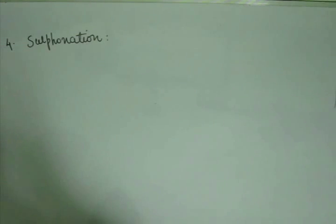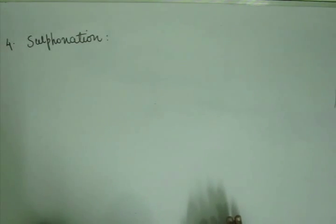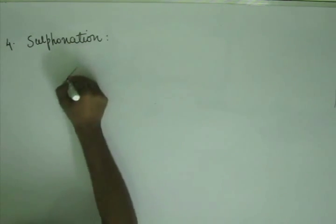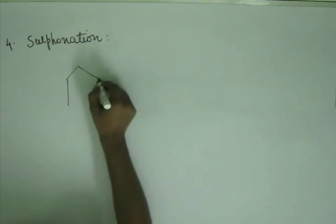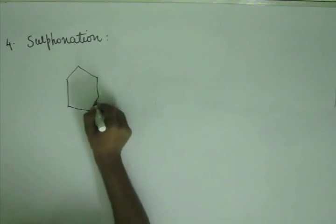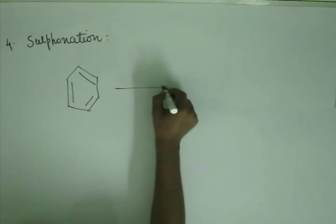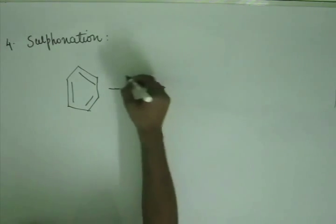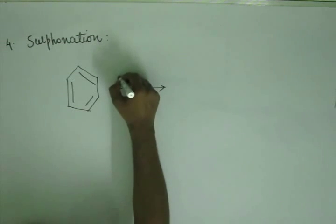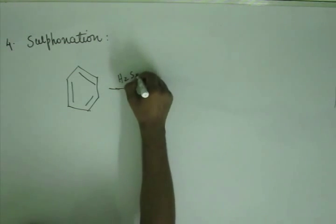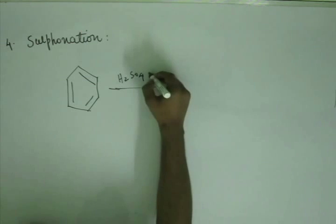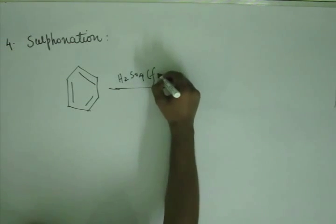Now we move on to sulfonation. Sulfonation will be carried out on exactly the same line as alkylation, acylation, and nitration. All we have to worry about is how the sulfonium ion will be generated, like how nitronium ion is generated. Sulfonation can be carried out using fuming H₂SO₄.